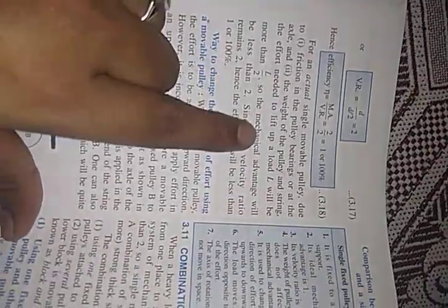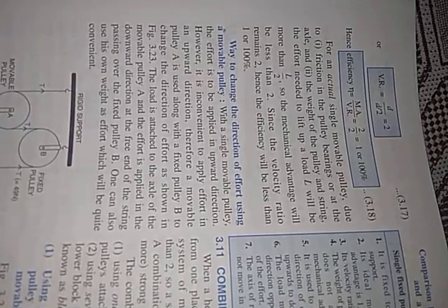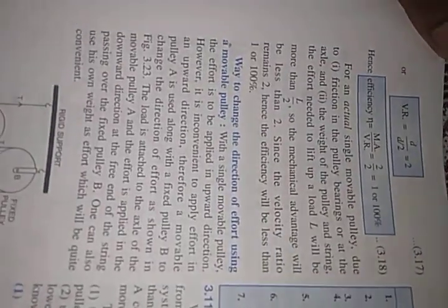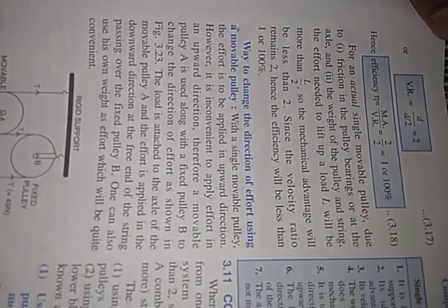On substituting the values, velocity ratio equals 2, so efficiency equals MA upon VR which is 2/2, again giving 100%. But this is not possible in an actual machine. Due to friction and the weight of the pulley itself, the efficiency of the single movable pulley system is reduced. Since the velocity ratio remains 2, the efficiency will be less than 100%.